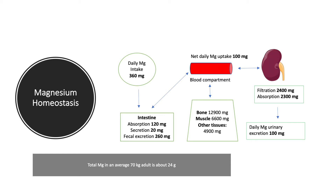Regarding magnesium homeostasis, the average intake is 360 milligrams. Total magnesium in an average 70 kilogram adult is about 24 grams, compared to calcium which is 1,000 grams, so magnesium is a lot less. Daily intake of magnesium is 360 milligrams. 260 gets excreted in the stool. 120 milligrams are absorbed, but 20 milligrams are secreted with intestinal secretions.